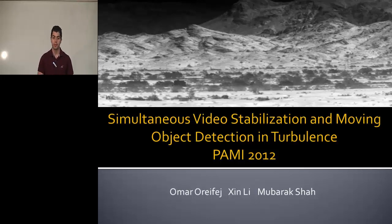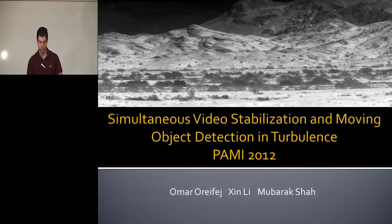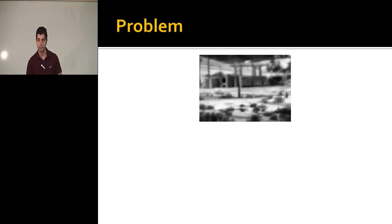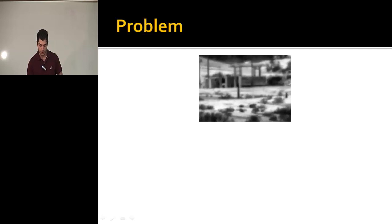Hello, I am Omar Raifij and this paper is called Simultaneous Video Stabilization and Moving Object Detection in Turbulence. It was published in PAMI this year and it's a joint work with Shen Li and Mubarak Shah. The problem we have is that we have a video taken in desert conditions with atmospheric turbulence and a tiny moving object, and we are interested in two problems.